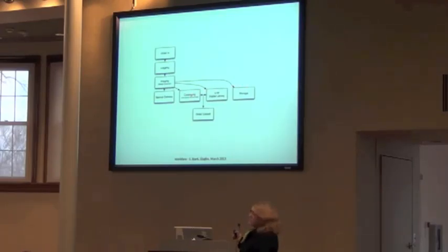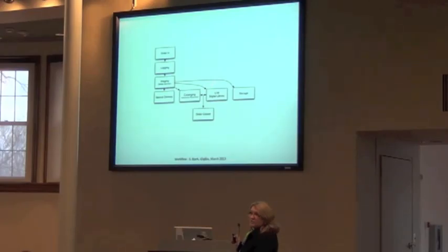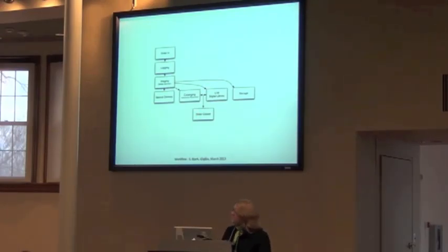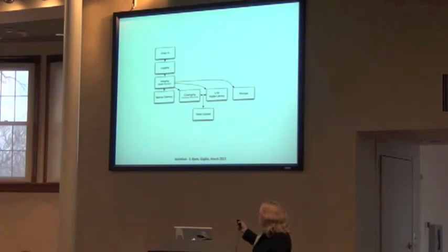There's an exchange of information between cataloging and UMDL, and then the item is closed at a certain point in time. So you can see it's not quite linear.